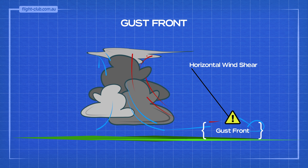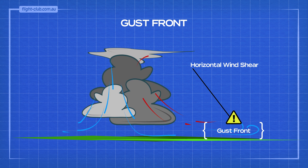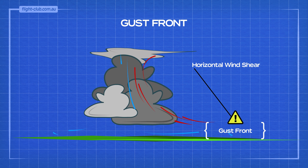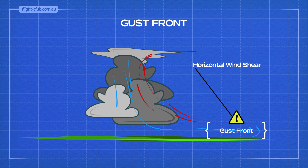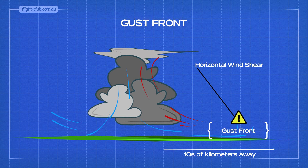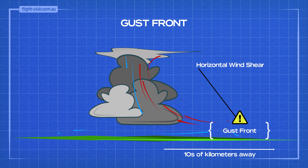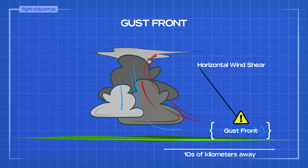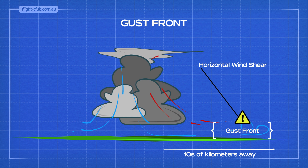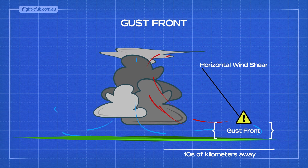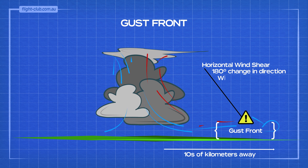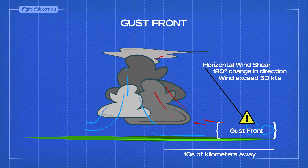Horizontal wind shear exists at ground level following the passage of the gust front. The front may be tens of kilometres ahead of the storm cell, and the sudden change in the surface wind may take pilots by surprise. The change in surface wind direction can be as much as 180 degrees and the speed can exceed 50 knots.